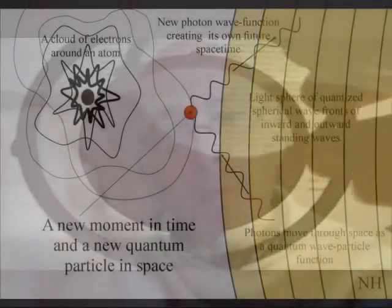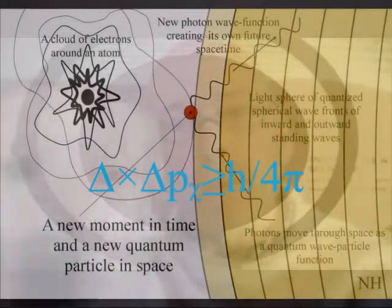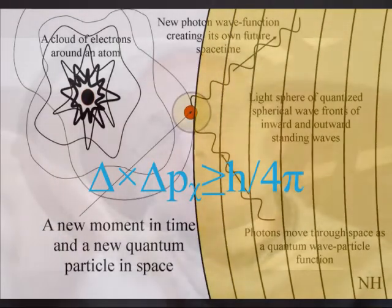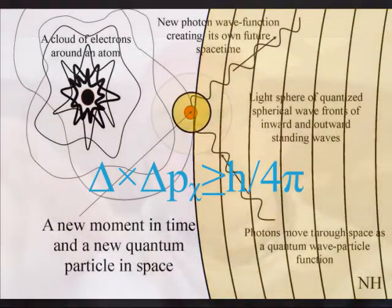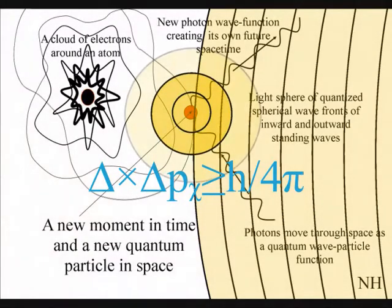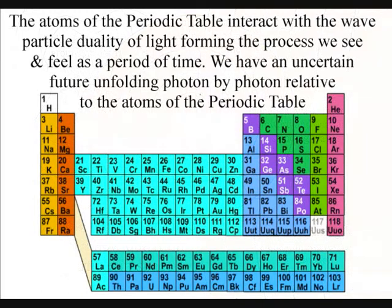Within such a process, light is a wave over a period of time and has particle characteristics when we have the spontaneous absorption and emission of light relative to the atoms of the periodic table.